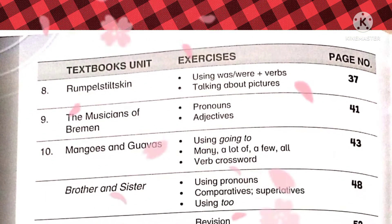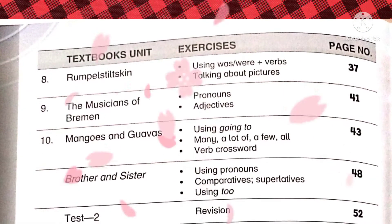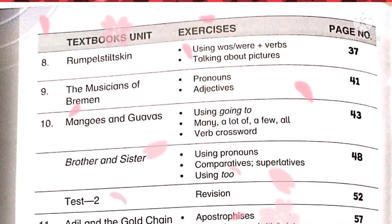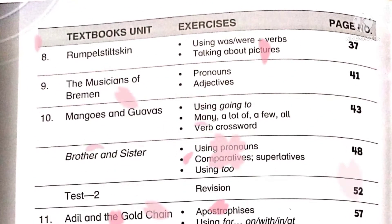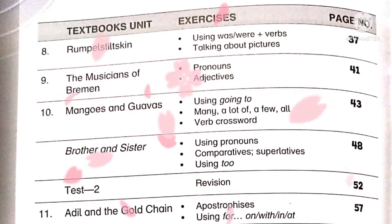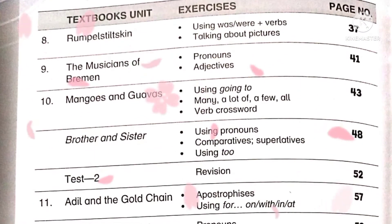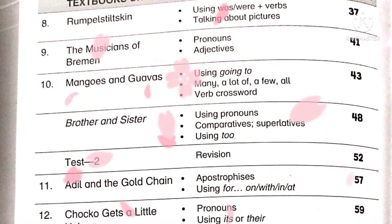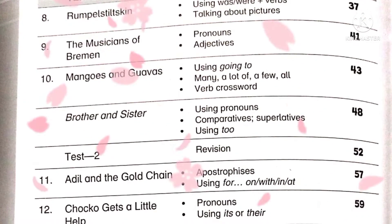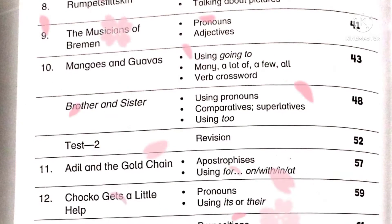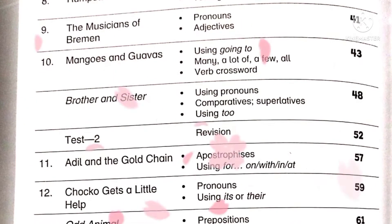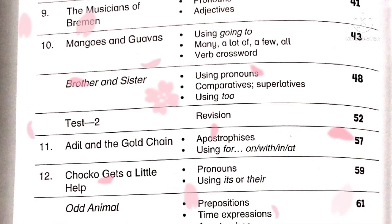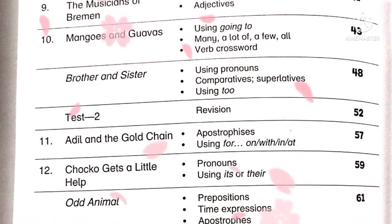In unit ten, 'Mangoes and Cows,' we will learn using 'going to,' and how to use the words 'many,' 'a lot of,' 'a few,' and 'all.' We will also learn verbs and crosswords. Next is 'Brother and Sister,' with grammatical concepts including pronouns, comparatives, superlatives, and using 'two.' Next is Test 2, which is also a revision.